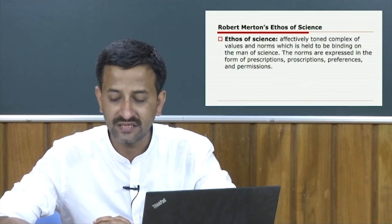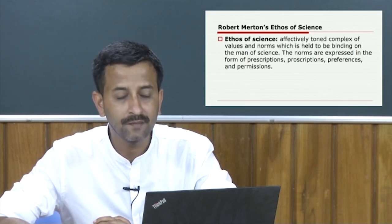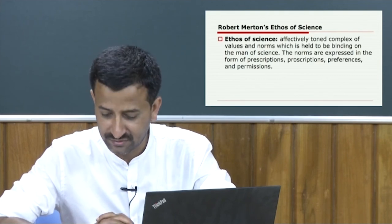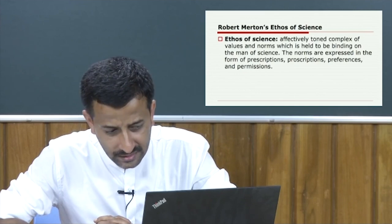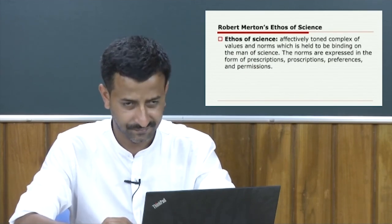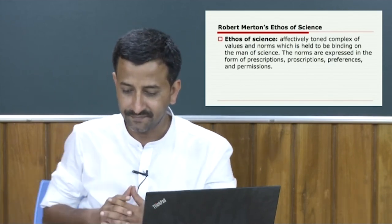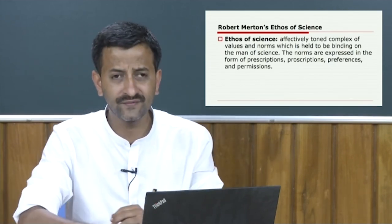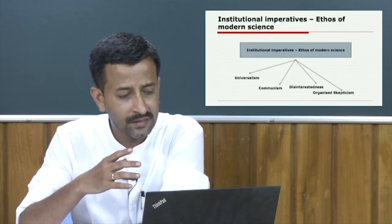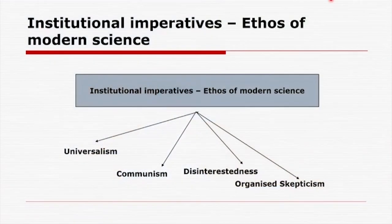The norms are expressed in the form of prescriptions, proscriptions, preferences, and permissions. Merton flags four institutional imperatives — four ethos of modern science. He delineated four institutional imperatives in terms of universalism, communism, disinterestedness, and organized skepticism.